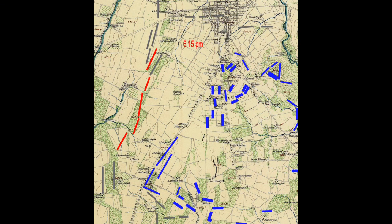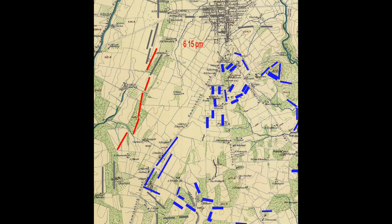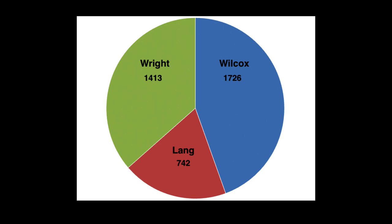Let's look at the position just before Anderson's attack started. Anderson's division is here, highlighted in red. From the north: Mahone, Posey, Wright, Lang, and Wilcox's brigades. The two brigades on the north end, Mahone and Posey, never really joined the attack, so Anderson's division attacked with only three of his five brigades: Wright, Lang, and Wilcox. The brigades on the left and right flanks are the bigger ones — Wilcox's brigade on the south and Wright's brigade on the north. Lang, the smaller brigade, was in the center.